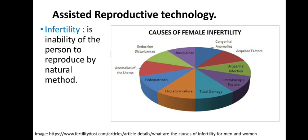Let's see what assisted reproductive technology is and why it is used. To understand that, we must be familiar with a concept called infertility. Infertility is the inability of a person to reproduce by natural methods. There are two terms: infertility and sterility. Infertility refers to a condition where a couple is unable to reproduce by natural methods, but with some assistance or treatment they will be able to have a baby. Sterility is a permanent disability where even with assistance the individual will not be able to have children.